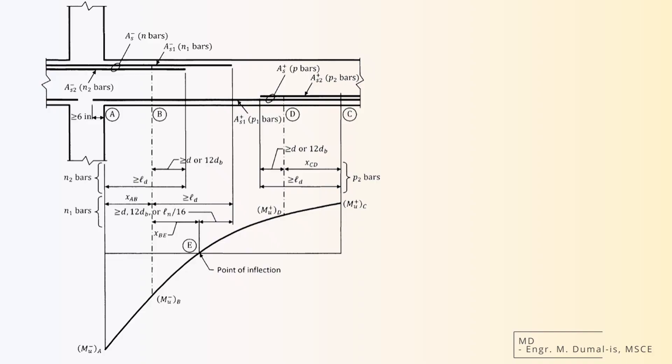bars are still anchored past those points to ensure they develop their full strength and prevent failure. The layout follows code rules for bar extension, splicing, and anchorage, making sure the reinforcement behaves as intended under load.